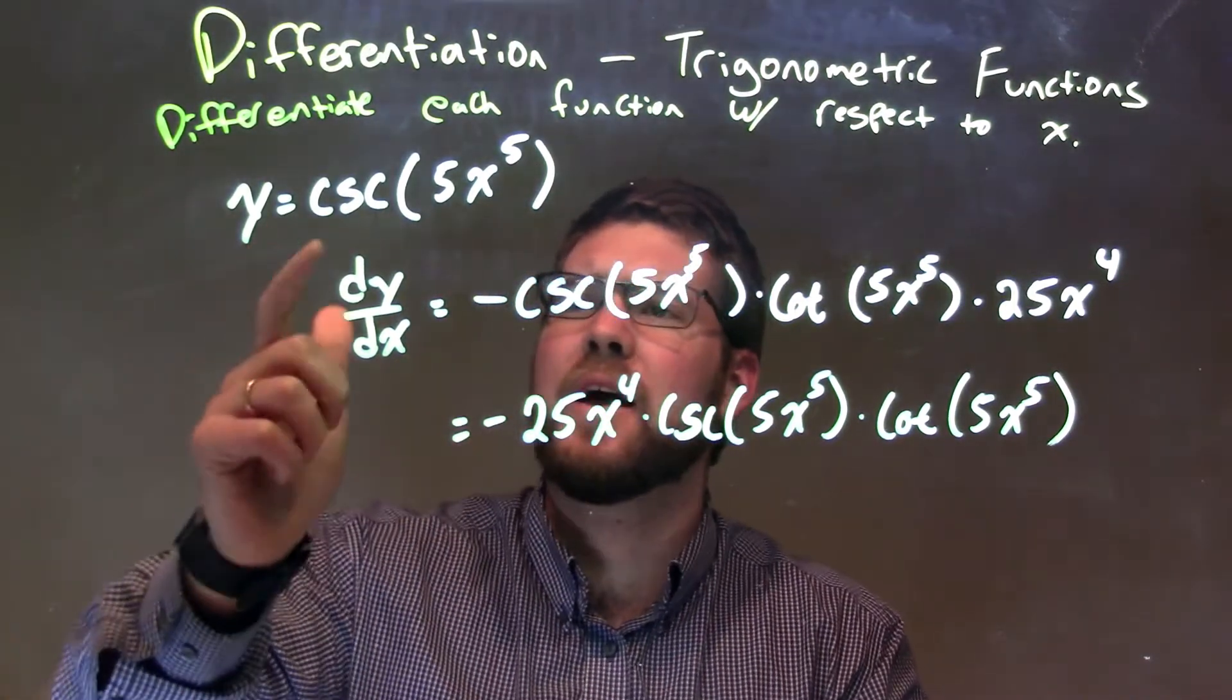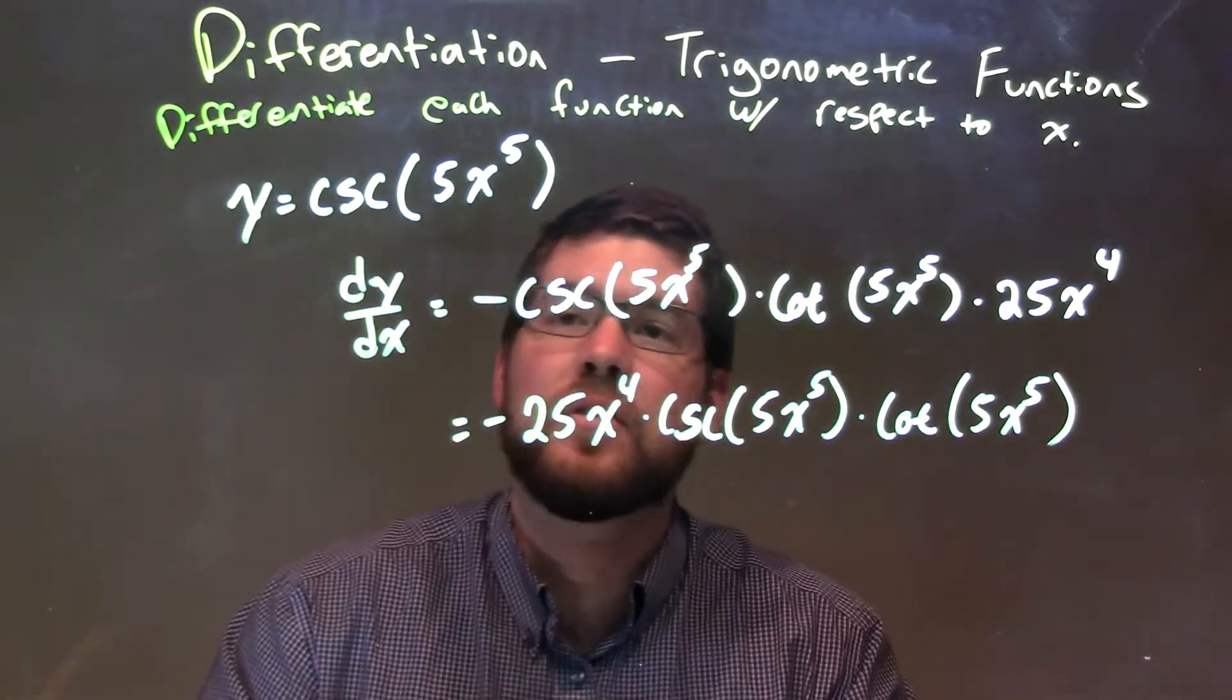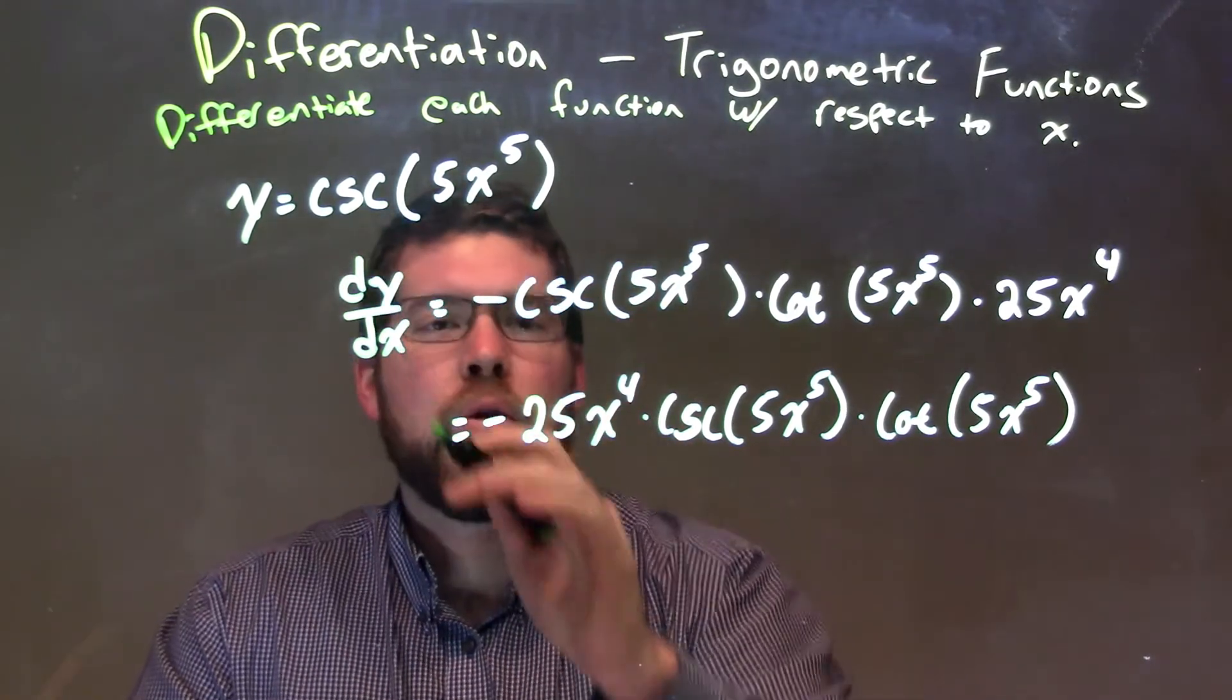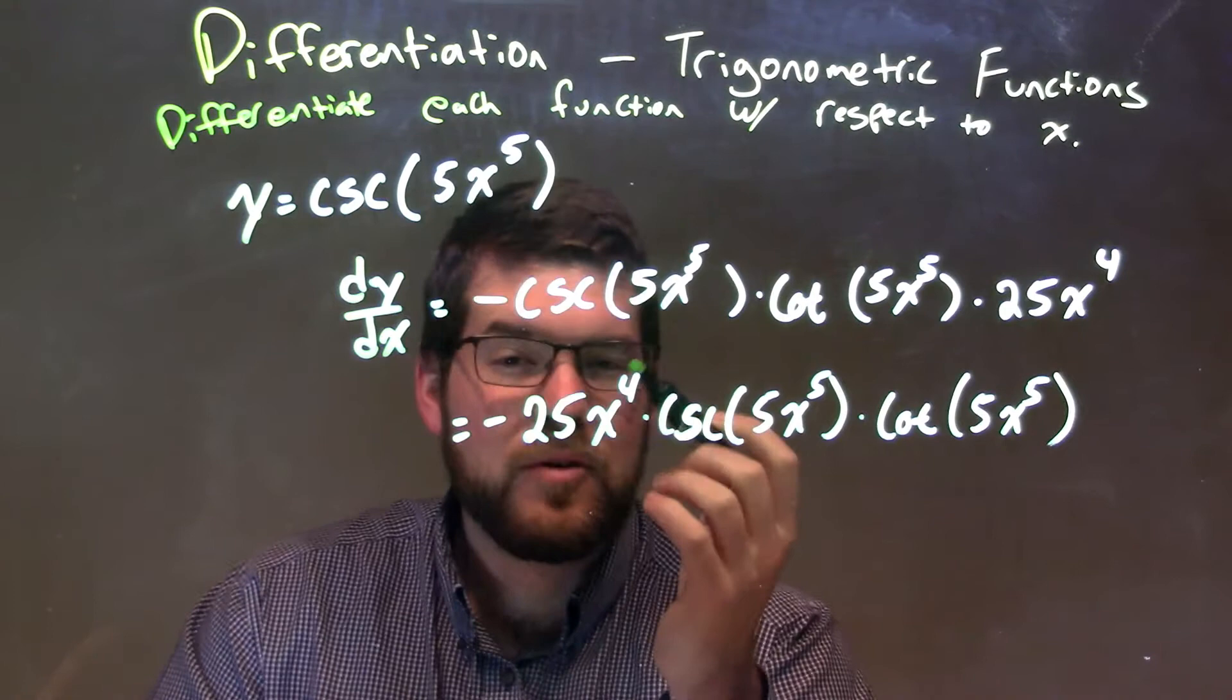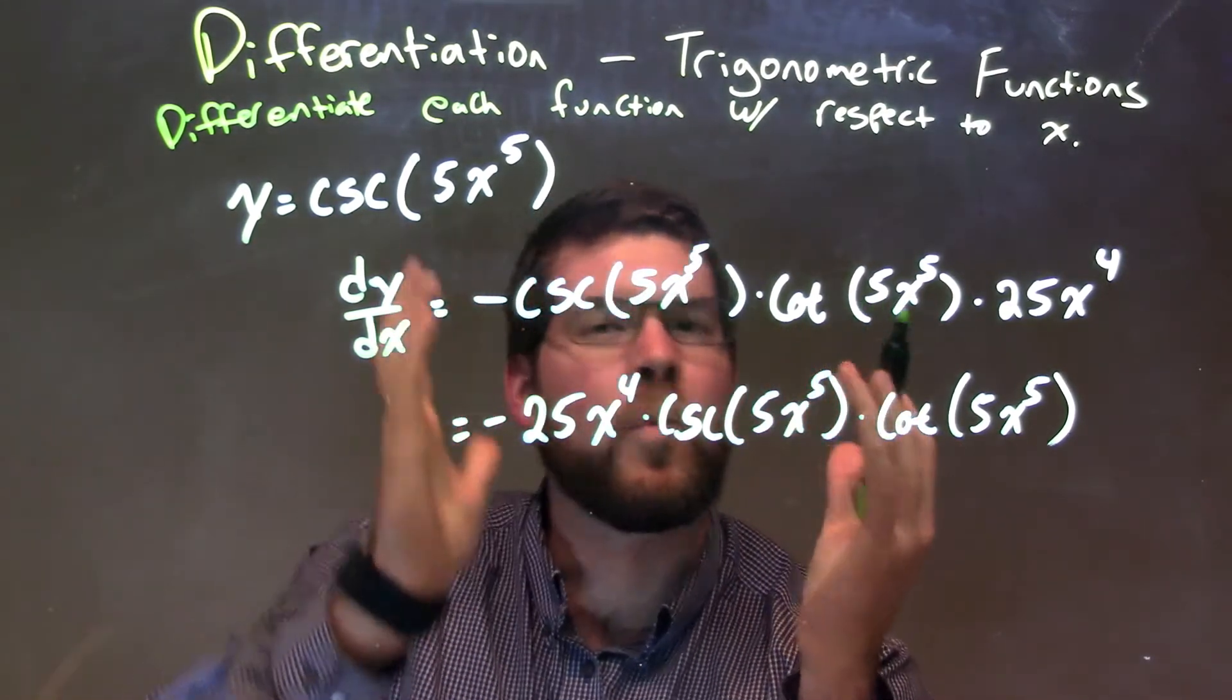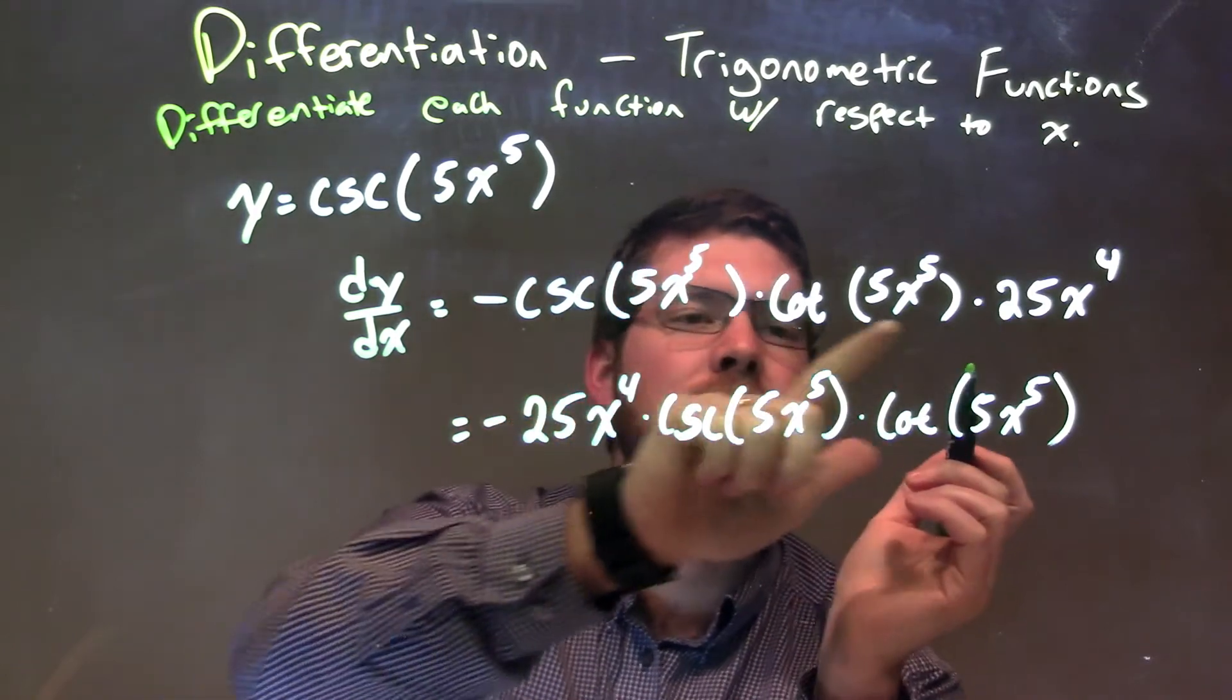So let's recap. We're given y equals cosecant of 5x to the 5th power. We think about, what's the derivative of cosecant? That is, derivative of cosecant is negative cosecant times cotangent. So we leave a space there because we're going to fill in what's inside of that parenthesis.